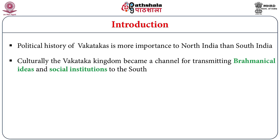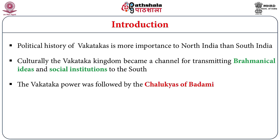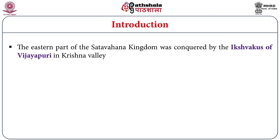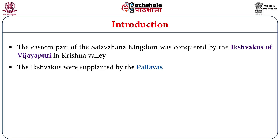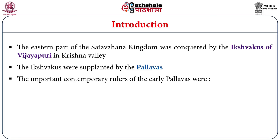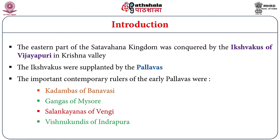But culturally, the Vakataka kingdom became a channel for transmitting the Aryan ideals and social institutions to the South. After the decline of the Vakatakas, the Vakataka power was followed by the Chalukyas of Badami. The eastern part of the Satavahana kingdom, that is in the Krishna valley, was succeeded by the Ichwakos. The Ichwakos, as the successors of the Satavahanas, played a key role in political as well as cultural history of the Dakkan. Their monuments were found in various parts of Andhra country at Amaravati and Nagarjuna Konda, which attracted international importance. The Ichwakos were supplanted by the early Pallavas. The important contemporary rulers of the Pallavas were the Kadambas of Banavasi, Gangas of Mysore, Shalankayanas of Vengi, Vistukundins of Indarpura, and Kalabras of Tamil Nadu.